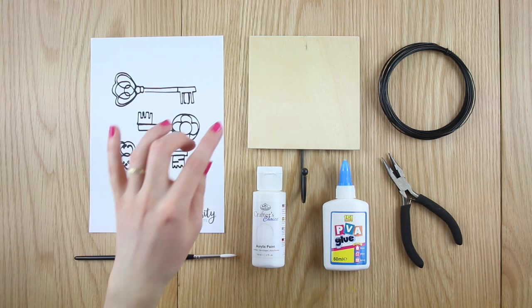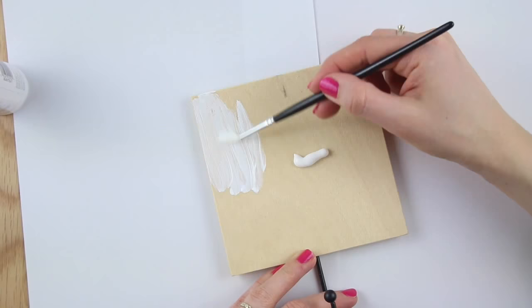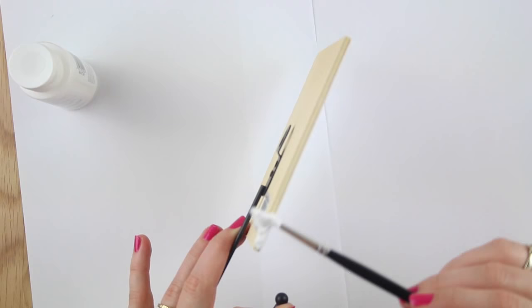Place some scrap paper to protect your table. Paint a coat of white paint across the wooden board including the side edges. To get an even coat apply the paint in one direction then the other to reduce streaky lines.